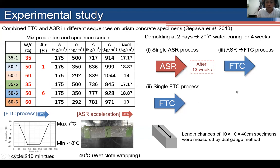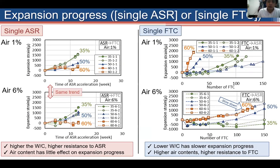We compare these three cases, and length changes were measured by the Dialogage method. For the single ASR case, the horizontal axis is time of ASR acceleration and the vertical axis is expansion strain. Higher water-to-cement ratio cases show slower expansion. Comparing the two air contents — 1% and 6% — the results show almost the same trend, meaning air content has little effect on ASR expansion progress.